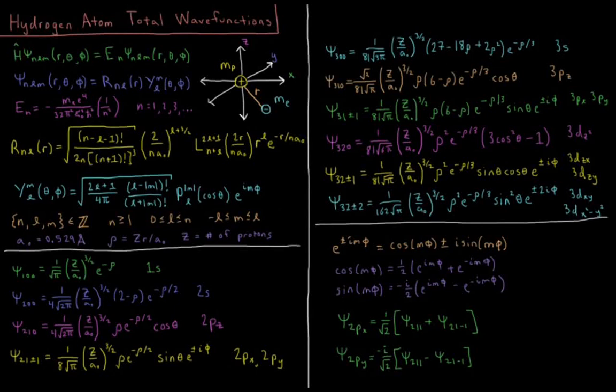This video will discuss the total wave functions of the hydrogen atom quantum mechanical model system. Our model, as it has been in this chapter, is a single proton fixed at the origin, and then we have an electron which is free to move in three-dimensional space. Its distance from the proton is indicated by R, the spherical polar coordinate radius.